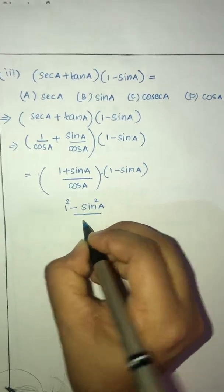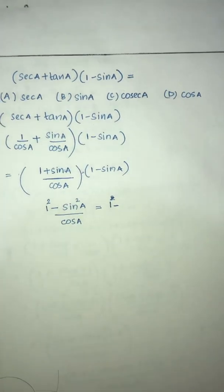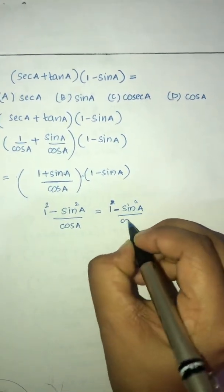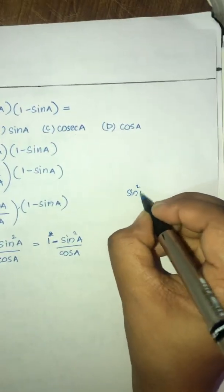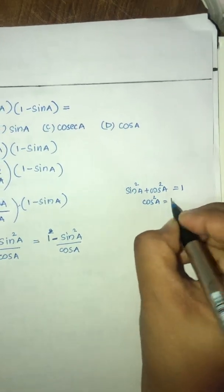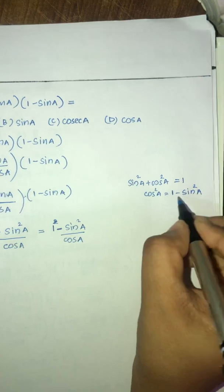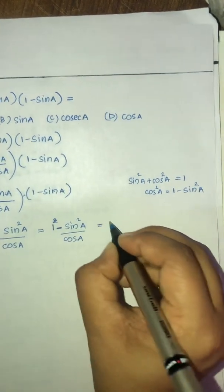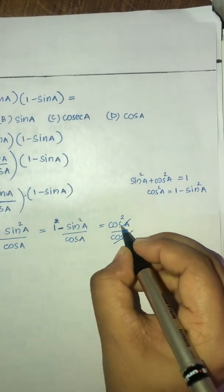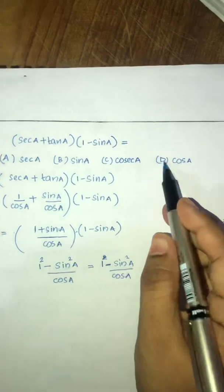1 minus sin²A divided by cosA. We know that sin²A + cos²A = 1, so cos²A = 1 - sin²A. Substituting, 1 - sin²A = cos²A, so we get cos²A divided by cosA. Cancelling one cosA, the answer is cosA. So option D is correct.